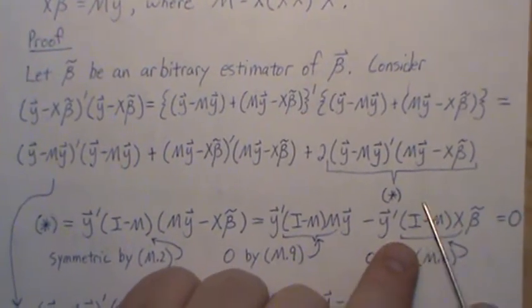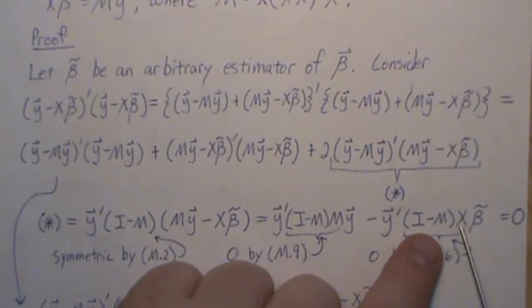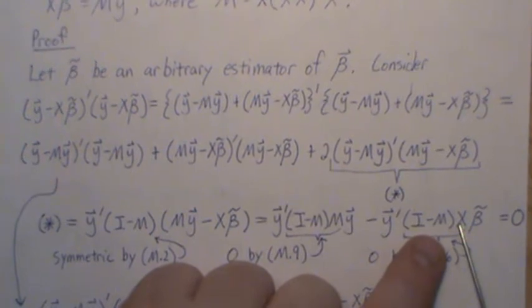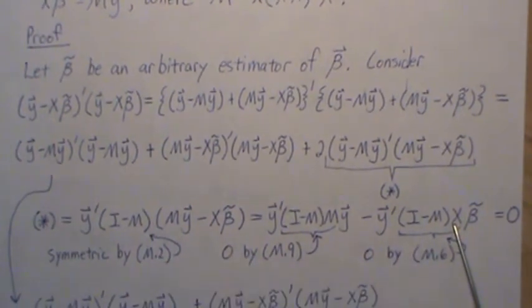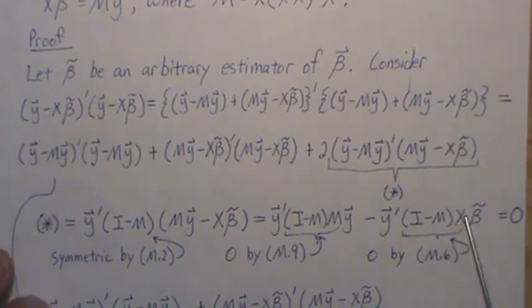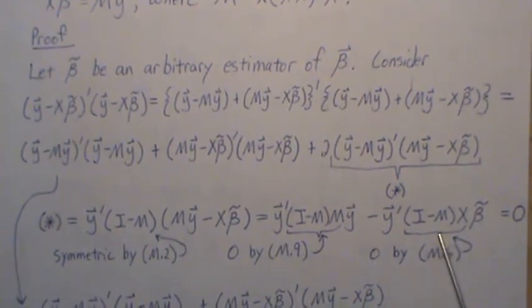And the same way here, this i minus m takes, when you pre-multiply it by any vector, puts it in the orthogonal complement space of x. But x is already in the column space of x. So the only way possible would be if that was a zero vector. So that's why that's zero.